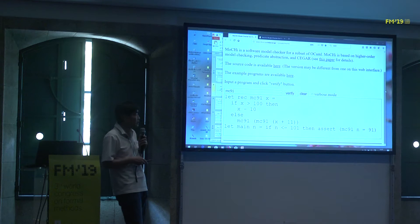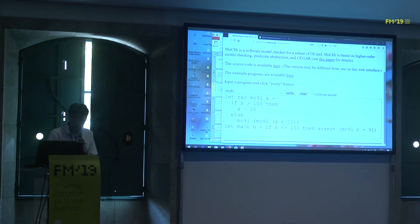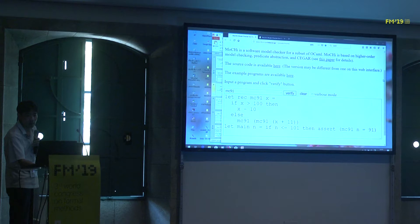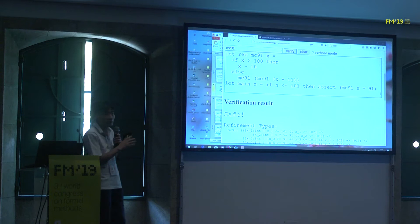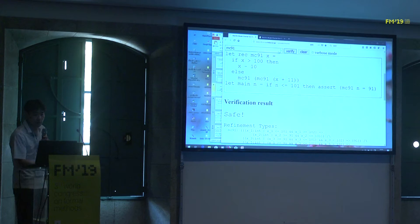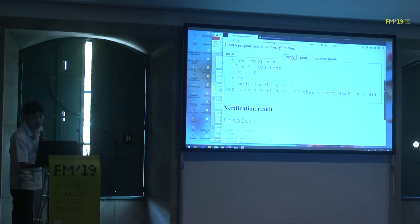To check that property, we just push this button. The system automatically analyzes it and says the program is safe — meaning the assertion never fails. If we change the program a bit, for example by inserting an equality here, then the system now says the program is unsafe, and it reports that an assertion failure occurs when input N is 100.